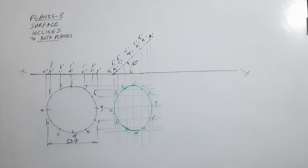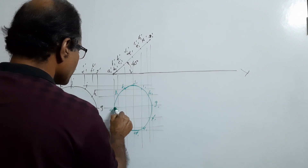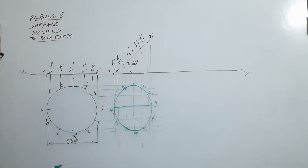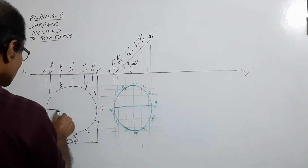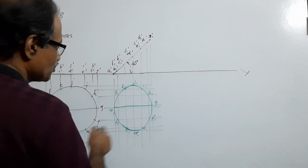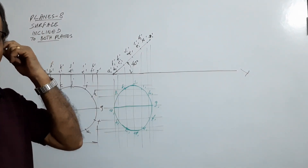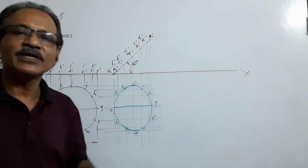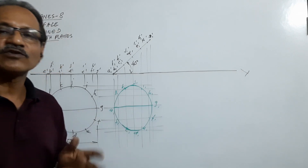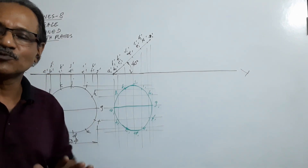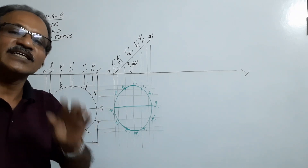This ellipse is the result. The concerned diameter is diameter AG. Its plan is A1-G1. The peculiarity of diameter AG is that it is the only diameter with an endpoint A on the ground. No other diameter of the lamina has a point resting on HP. AG is the diameter whose end A is on HP.